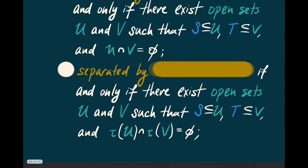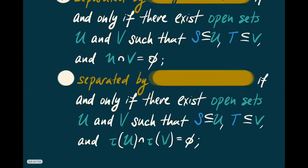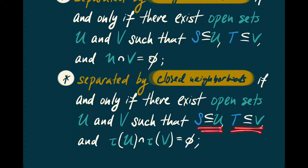There's a stronger variant: you could be separated not by neighborhoods, but by closed neighborhoods. That means S and T are contained in open sets U and V, respectively, whose closures do not intersect. In that case, we say that S and T are separated by closed neighborhoods.